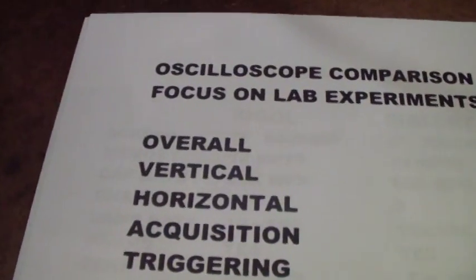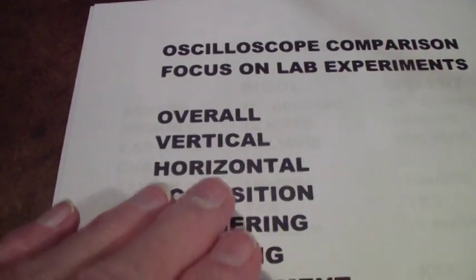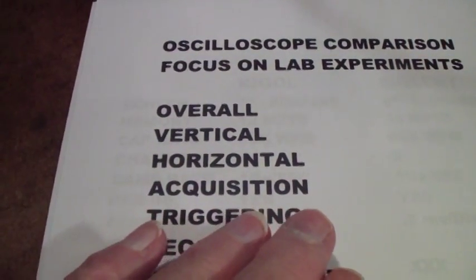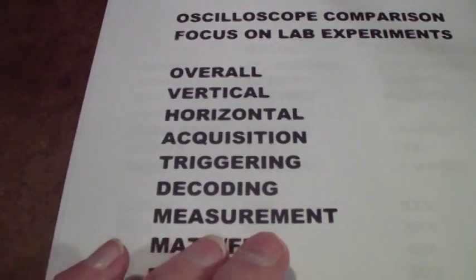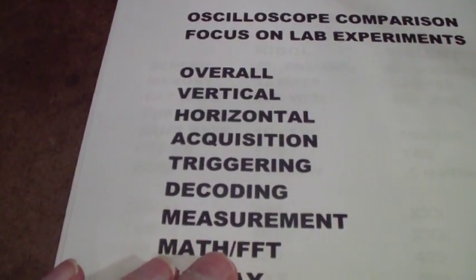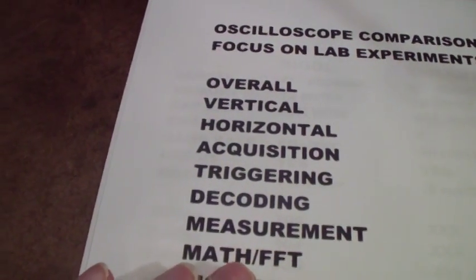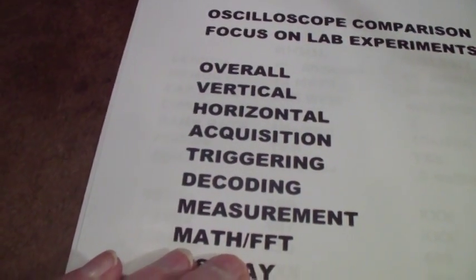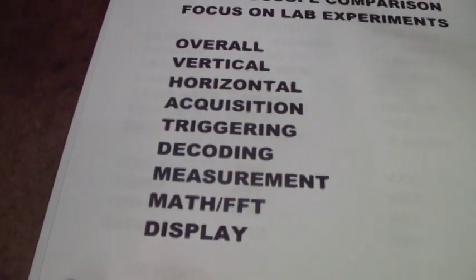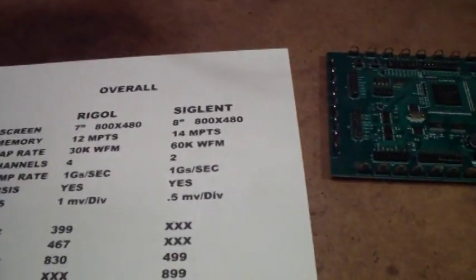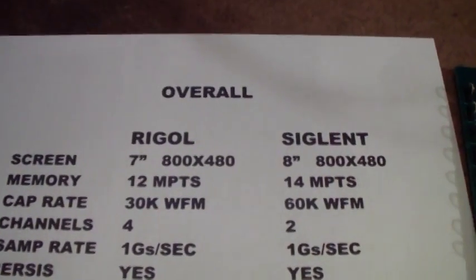I'm going to divide this into sections covering vertical, horizontal, acquisition interface, triggering options, decoding available, measurement, math — which means math operations performed between two channels and usually includes a fast Fourier transform — and then display characteristics. So let's take a look at that with regard to these two scopes; I've prepared an overview.